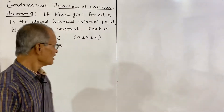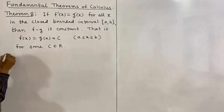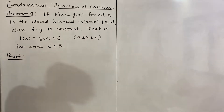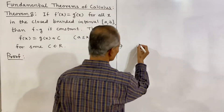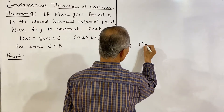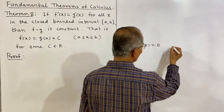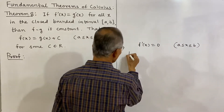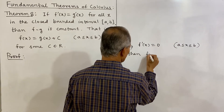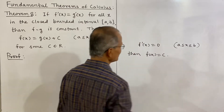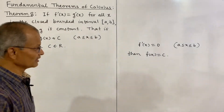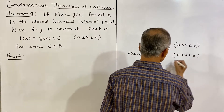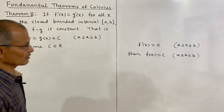We shall prove Theorem 8 using Theorem 7. Theorem 7 states: if f'(x) = 0 for all x in [a, b], then f(x) is constant, equal to c. We will make use of this result.